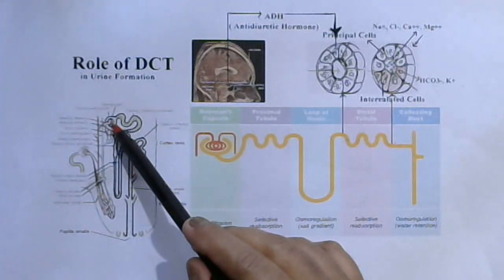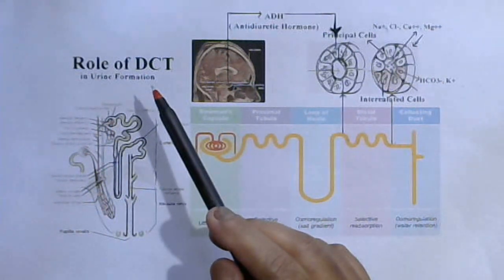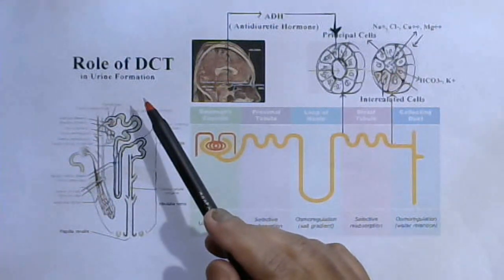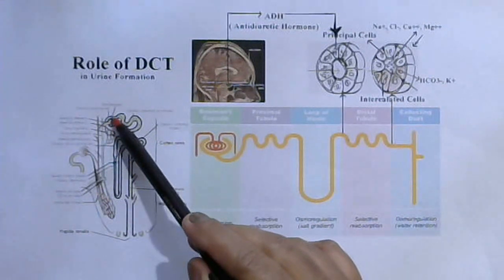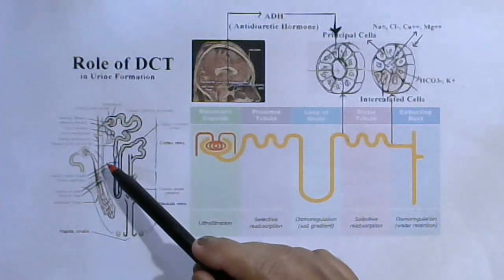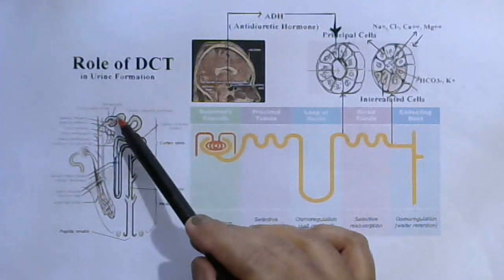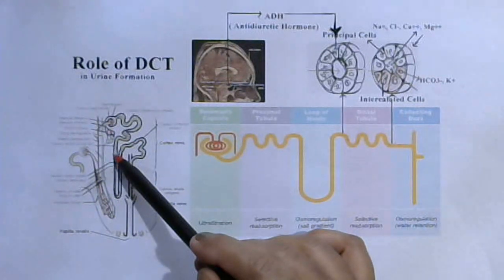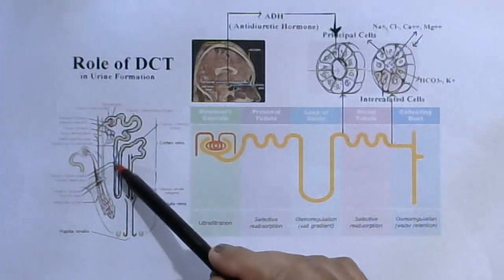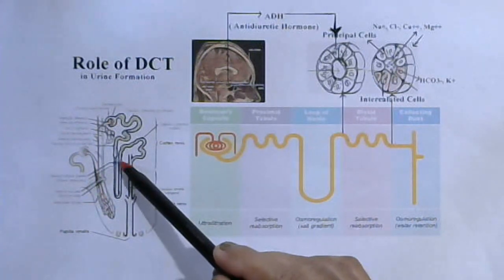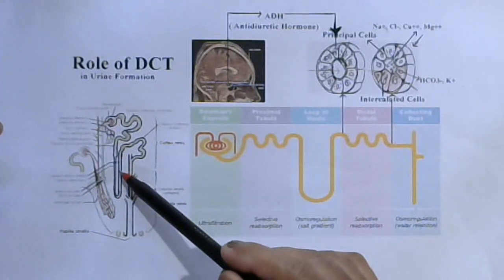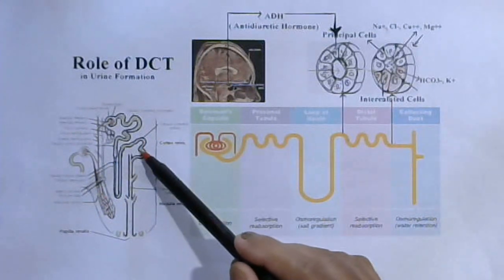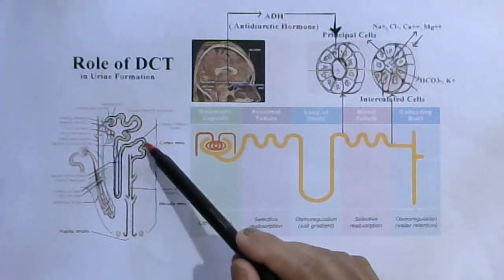The glomerulus is basically a tuft of blood capillaries and is the main filtering structure. Blood circulation and blood filtration occur here, and this is called the Bowman's capsule. Both the Bowman's capsule and the glomerulus together are called the Malpighian body or renal capsule. The next part of the nephron, which is highly coiled, is called the proximal convoluted tubule or PCT. The next U-shaped portion is called the Loop of Henle, with a descending limb and an ascending limb.